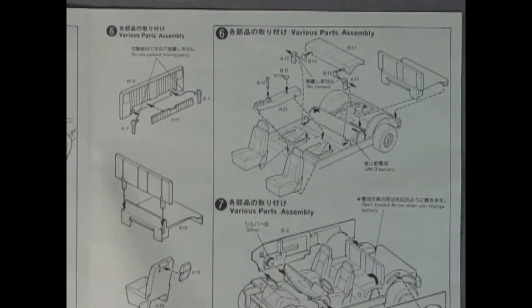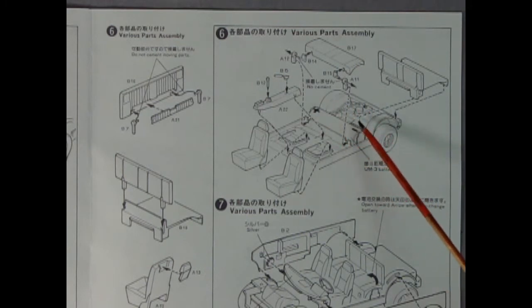Now with the driveline out of the way we can concentrate on our interior. What you'll notice here is we have this cover for our battery at the back of the car which also covers our switch and our electric wires. This is all covered over with the back seat.